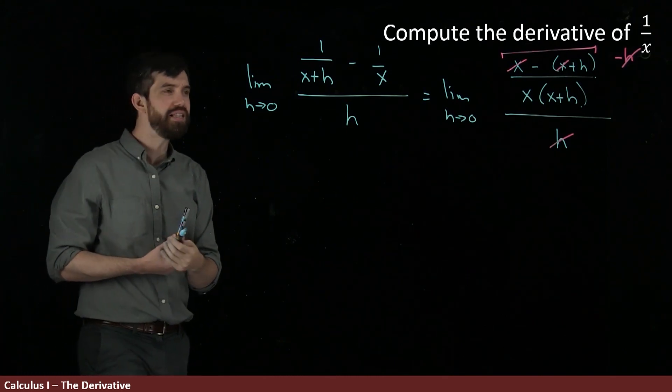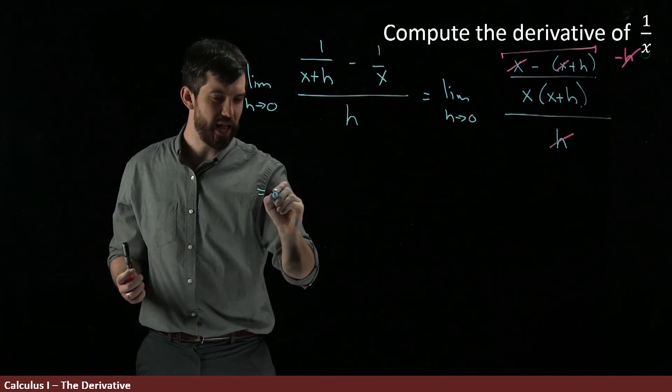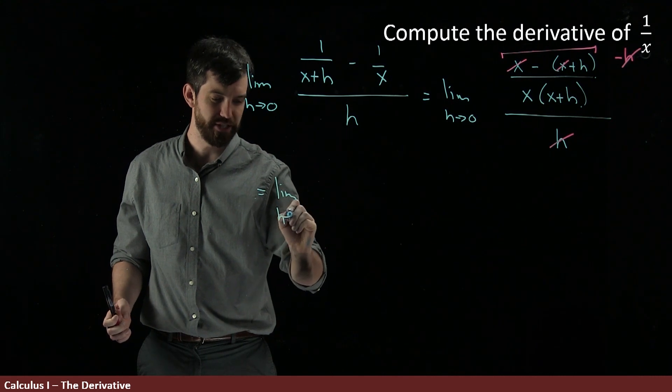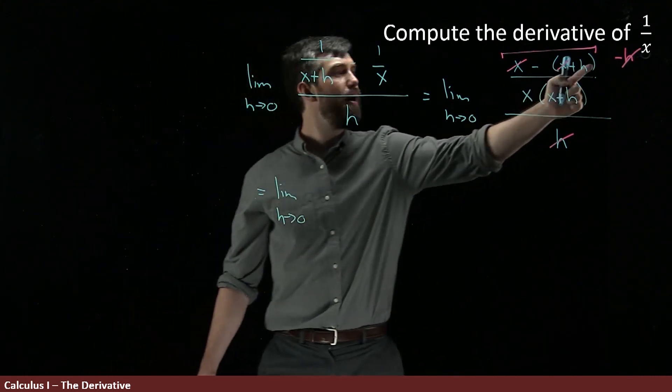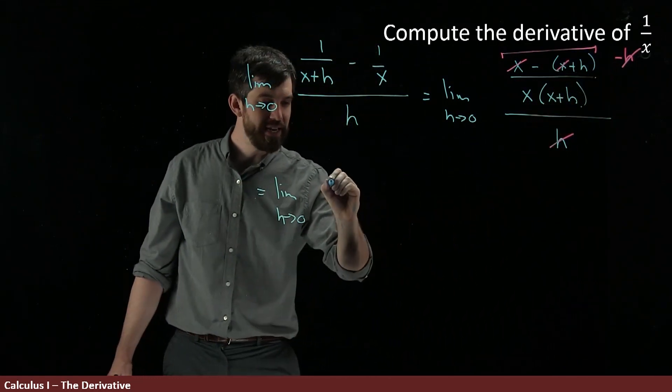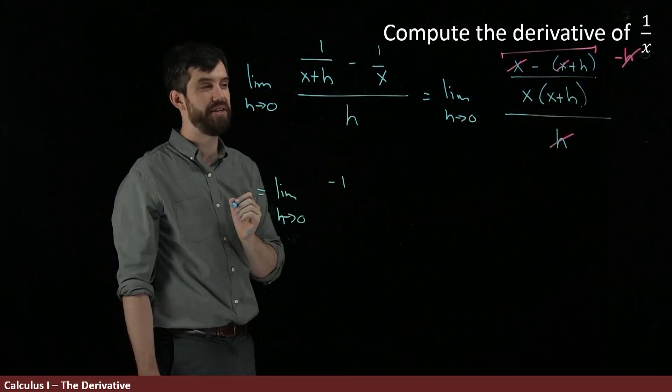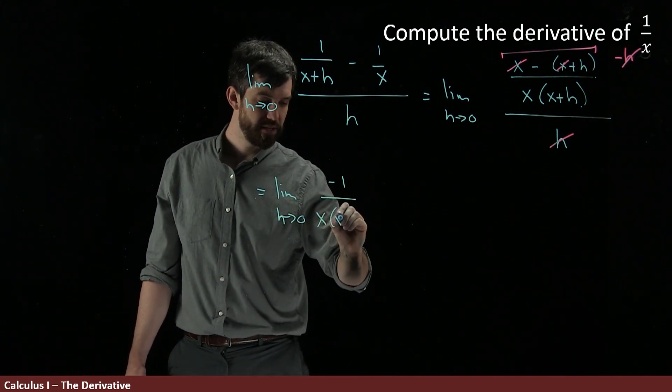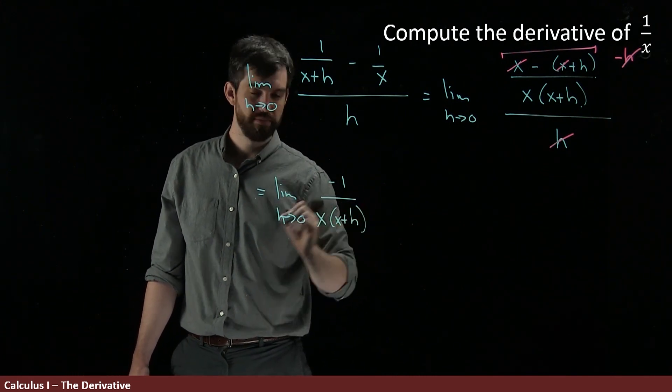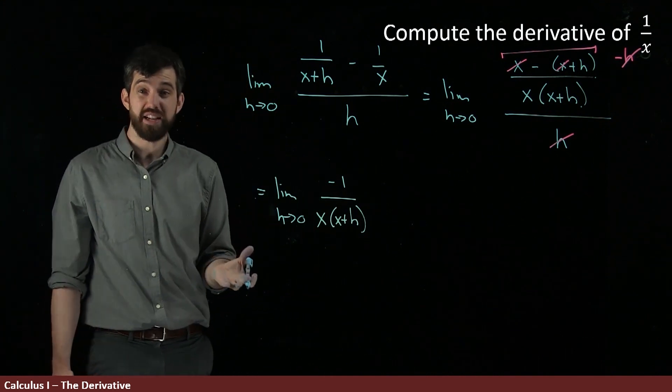And so what this leaves me with, if I'm being careful with my signs, I'm going to copy and paste the limit as h goes to zero. That never changes. But I still have the minus sign here in front of the h. The minus, I'll make it a minus one now that the h cancels. So minus one divided by x times x+h. Okay, it got a little simpler. That's good.